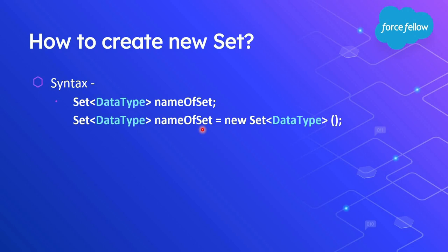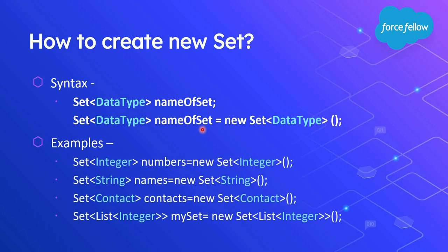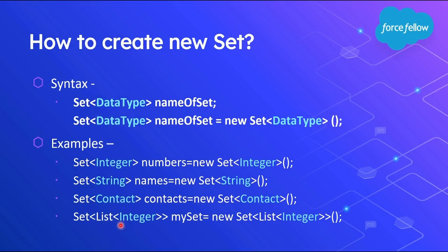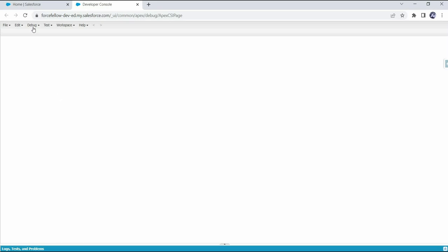Once we initialize a set using the 'new' keyword, memory gets allocated to the variable so we can perform all operations to add or remove items. Let's see some examples of how to declare a set with different data types: we can create a number set with Integer, a name set with String, a contact set using the Contact sObject, and we can also use a List as a data type inside a set. Now let's open the Developer Console and practically see how to declare and use sets in Apex using the Execute Anonymous window.